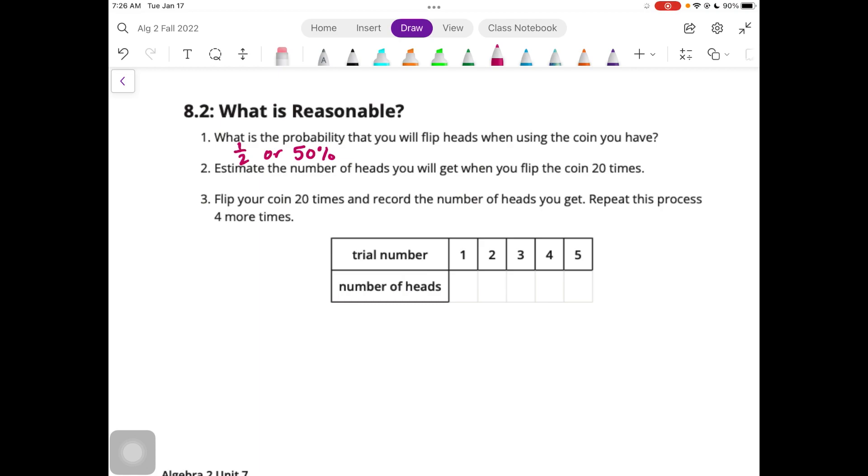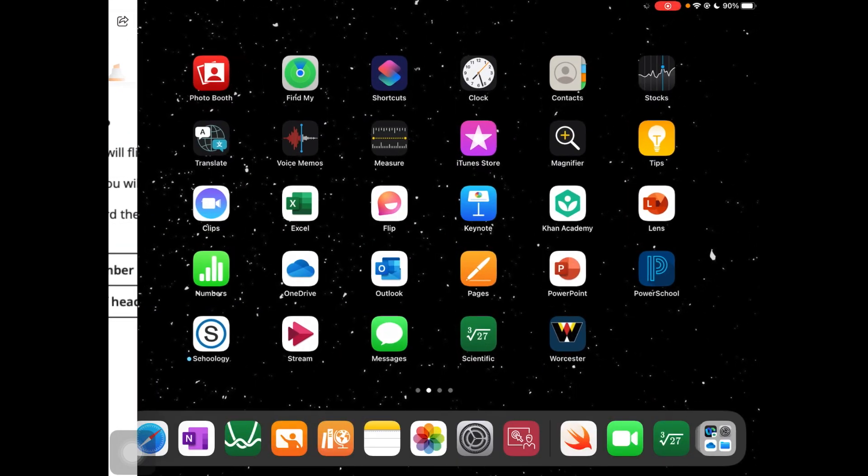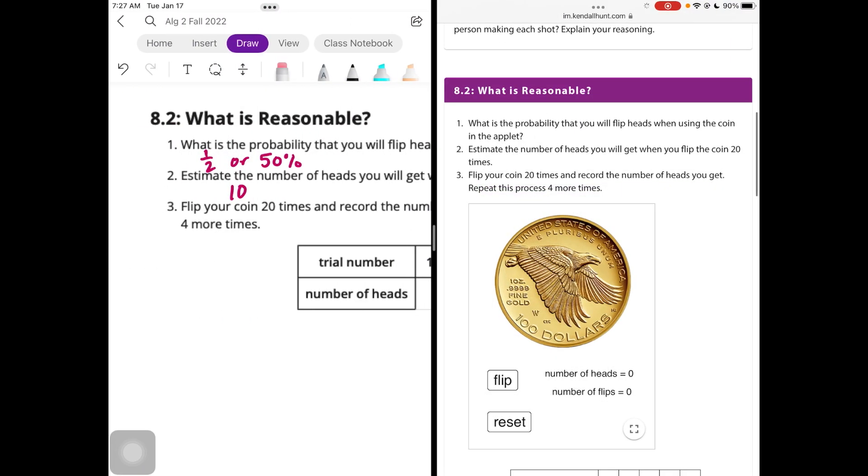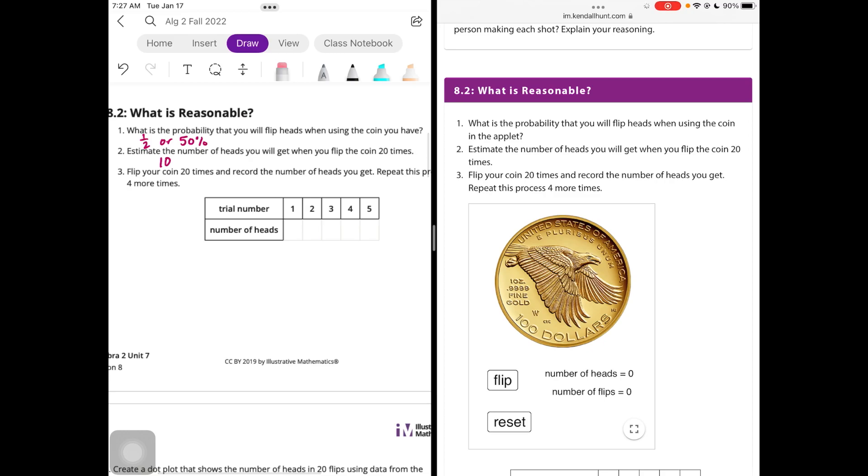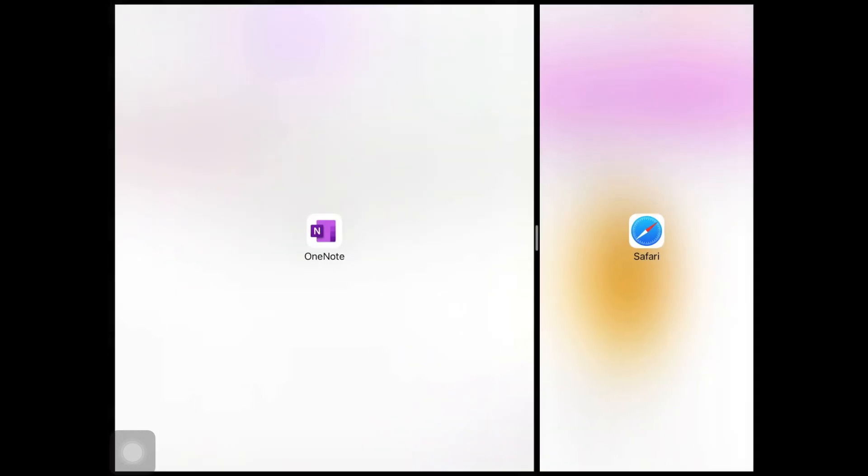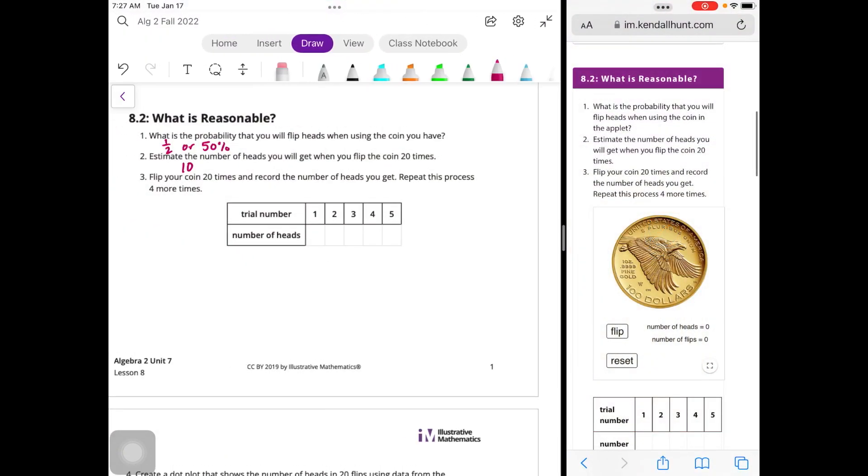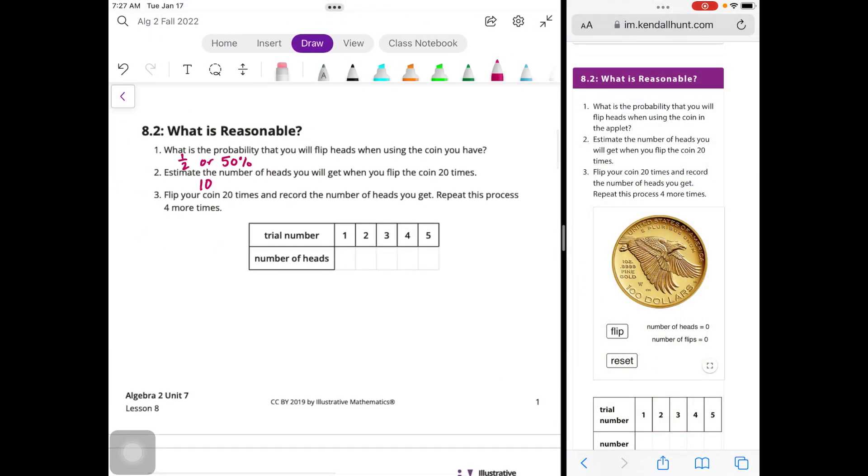Estimate the number of heads you will get when you flip the coin 20 times. Well, if it's half the time, then that would be 10 times that it will land on heads. All right, so we are going to use an applet that we're pulling up from the IAM website. Illustrative Mathematics, that's our curriculum. So here is our applet. And I'm going to see what happens if I make that a little bit smaller. So that way we have a little bit more space to write. We're going to flip our coin 20 times and record the number of heads that we get. So we're going to tap on this little flip button over here.